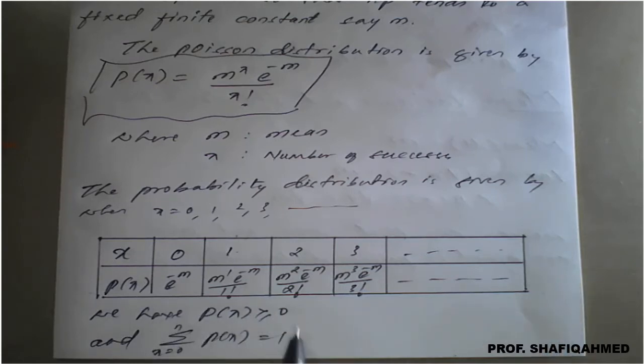Here also the conditions are the same: summation of P(x) greater than or equal to 0, means this value should be positive, and summation of this will be 1. I will just show how it becomes 1 here now.